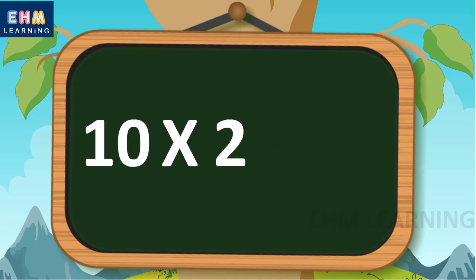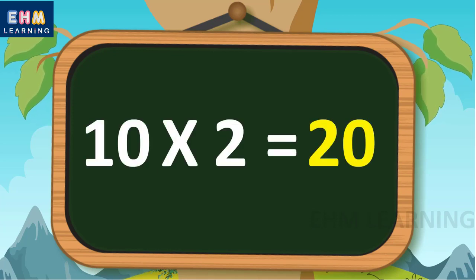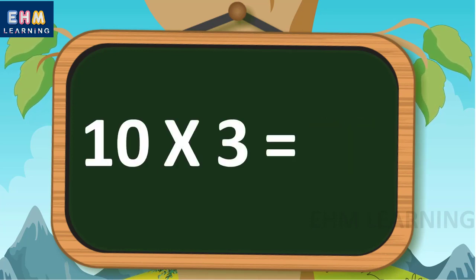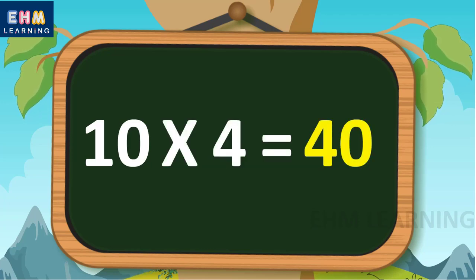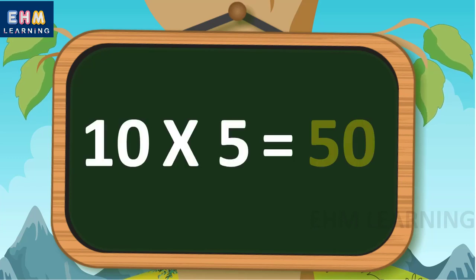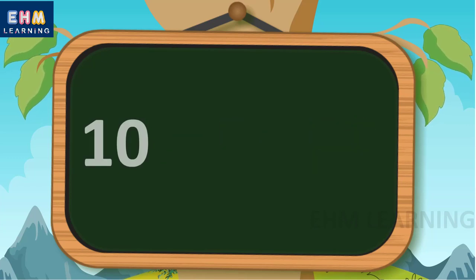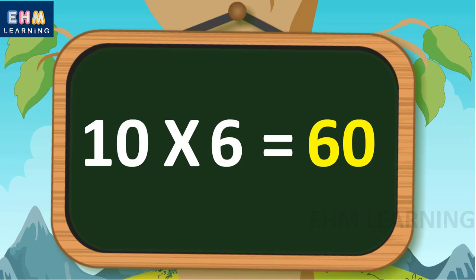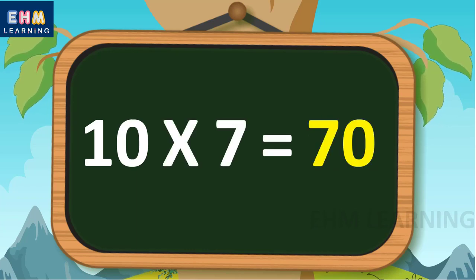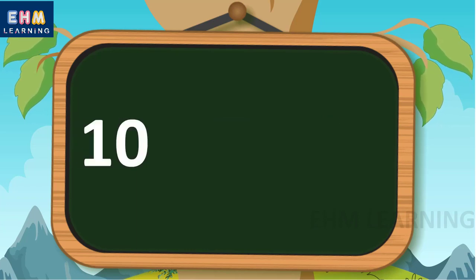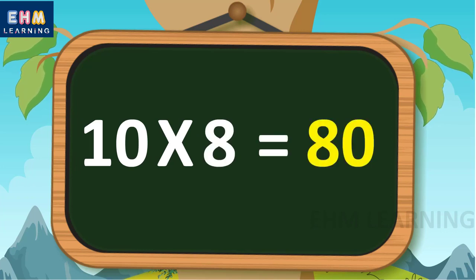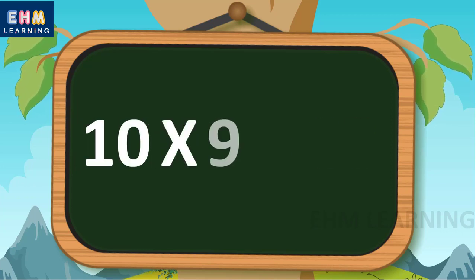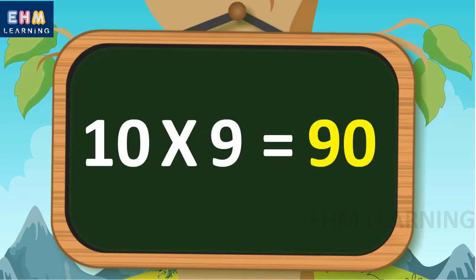Table of ten. Ten ones are ten, ten twos are twenty, ten threes are thirty, ten fours are forty, ten fives are fifty, ten sixes are sixty, ten sevens are seventy, ten eights are eighty, ten nines are ninety.